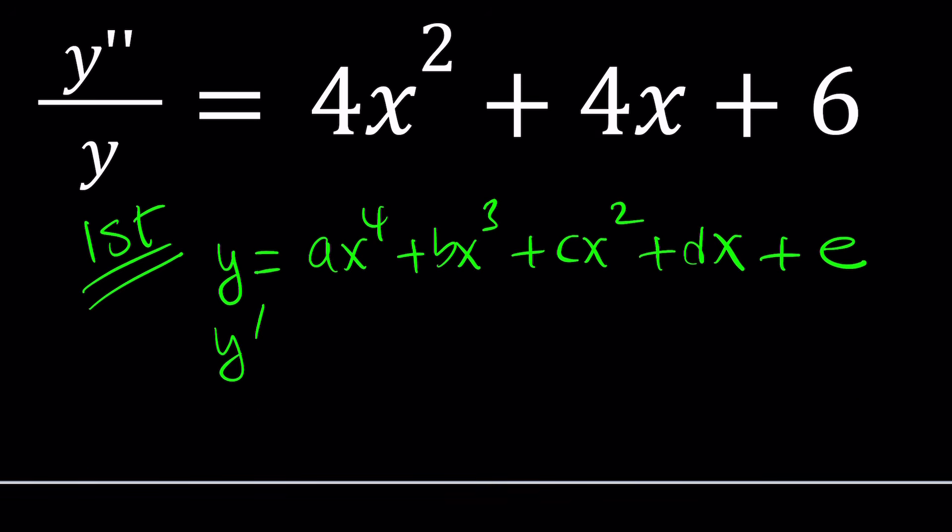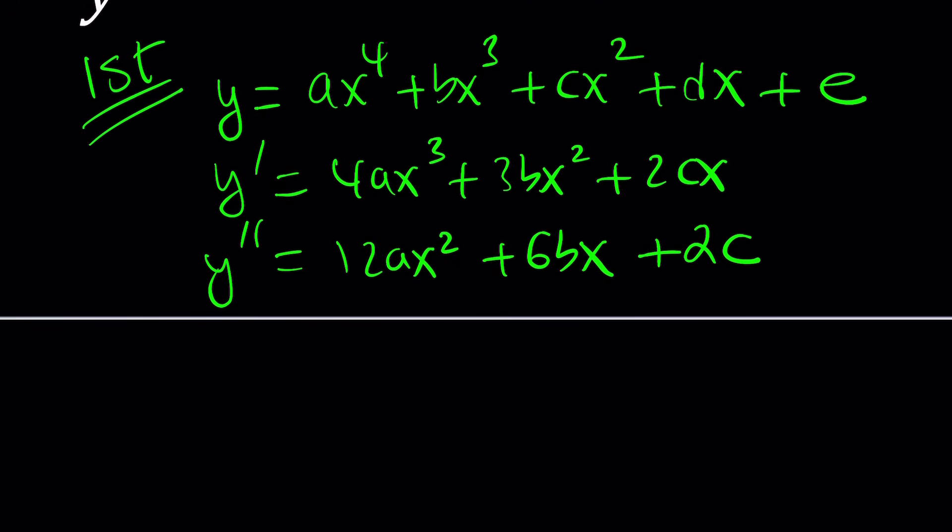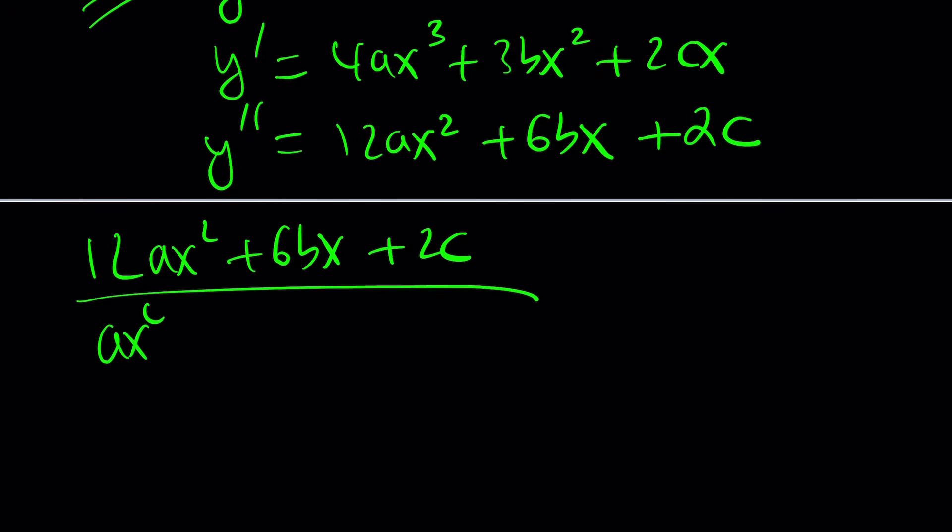Now, if you differentiate this twice, first you're going to get 4ax cubed plus 3bx squared plus 2cx. If you differentiate one more time, you're going to get 12ax squared plus 6bx plus 2c. To be or not to be, that's the problem. And you're going to get the following. Now, go ahead and divide this 12ax squared plus 6bx plus 2c by the y itself, which is quartic.